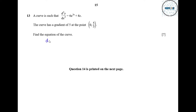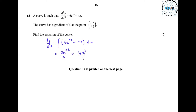First we find dy/dx: dy/dx equals the integral of (6e^(3x) plus 4x) dx. Integrating: 6e^(3x) divided by 3 (the differential of 3x) plus 4x² divided by 2 plus c. Simplifying: 3 cancels with 6 to give 2, and 4 divided by 2 gives 2, so dy/dx equals 2e^(3x) plus 2x² plus c.